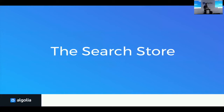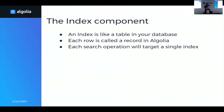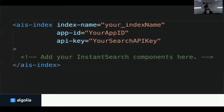So first the search store — for that, we're going to take a look inside our index component. What we call an index in Algolia, you can think of it as a table in your database. Every line in the table is an actual record in Algolia. Every search operation has to target a single index. Here's what the index component looks like when you use it — it's a simple wrapper component and the minimum information we need to pass includes the index name, the application ID to locate the index in Algolia, and finally the API key.